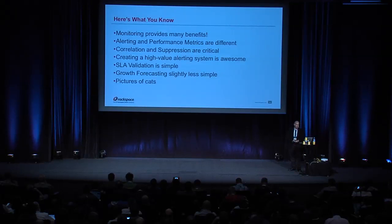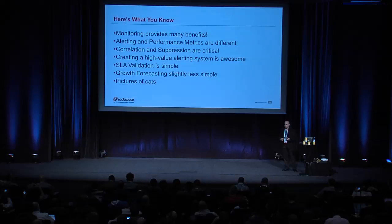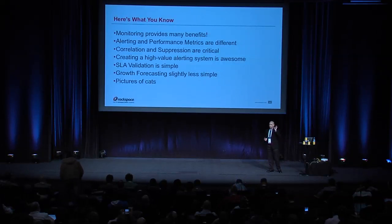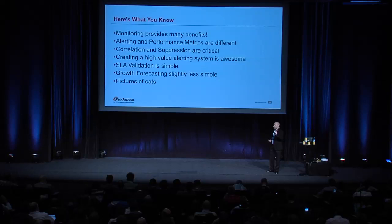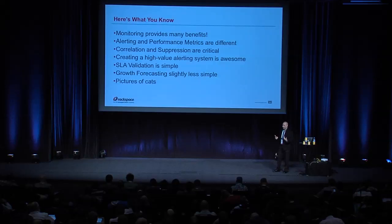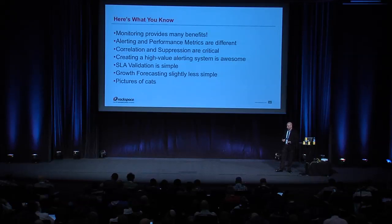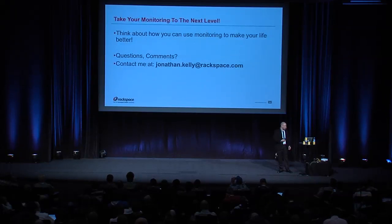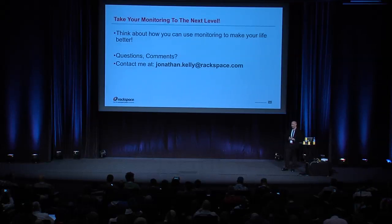Here's what you should take away: monitoring can provide a lot of benefits. Alerting and performance metrics are different but both critical. Correlation and suppression are absolutely critical for making alerts meaningful — ensuring they indicate an actionable failure state and point to where the failure occurred. Creating a high-value alerting system will make your life better. SLA validation is simple; growth forecasting is slightly less simple. My challenge to you is to think about how you can apply these concepts to take your monitoring to the next level.